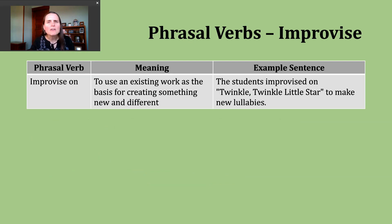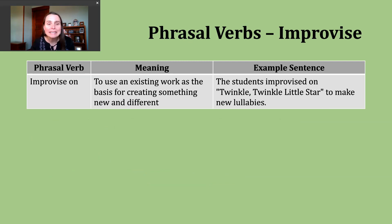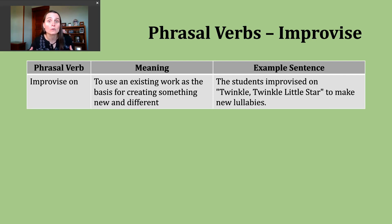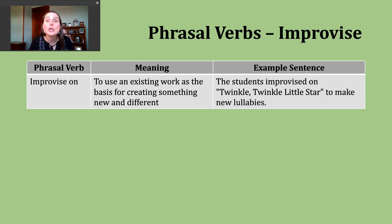There is one phrasal verb you might encounter, and that is to improvise on. The meaning here is to take something that already exists and use that to make something new or different. Let's take a look at an example sentence: the students improvised on 'Twinkle, Twinkle, Little Star' to make new lullabies.